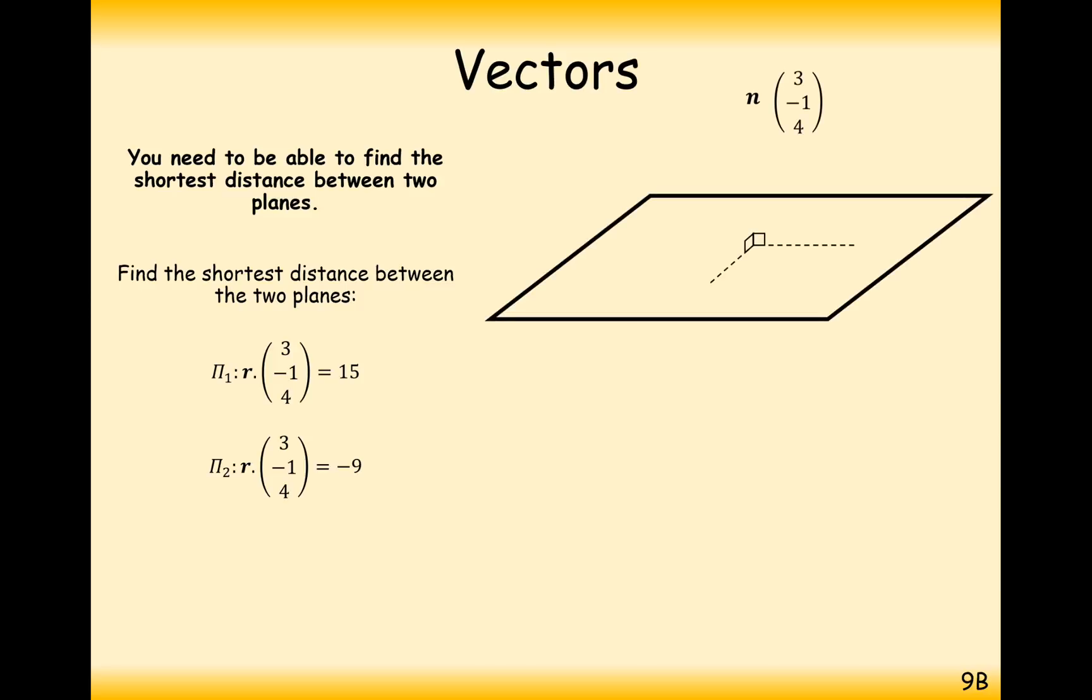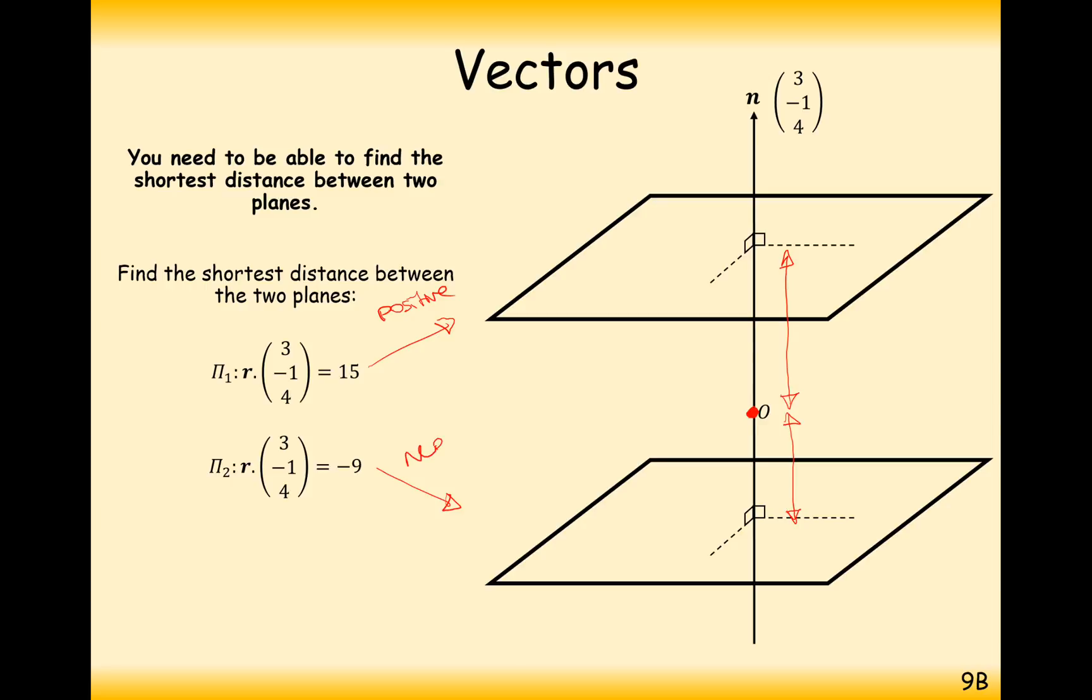Instead of the diagram looking like this, the diagram looks a little bit more like this, where we have an origin in the middle, and then we have the plane on one side, and we have the other plane on the other side of the origin. We can tell this is happening because we have one d value that is positive and one d value that is negative.